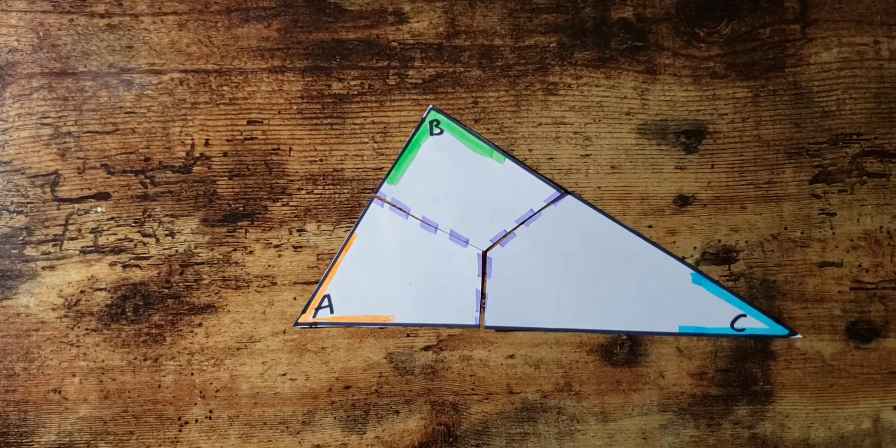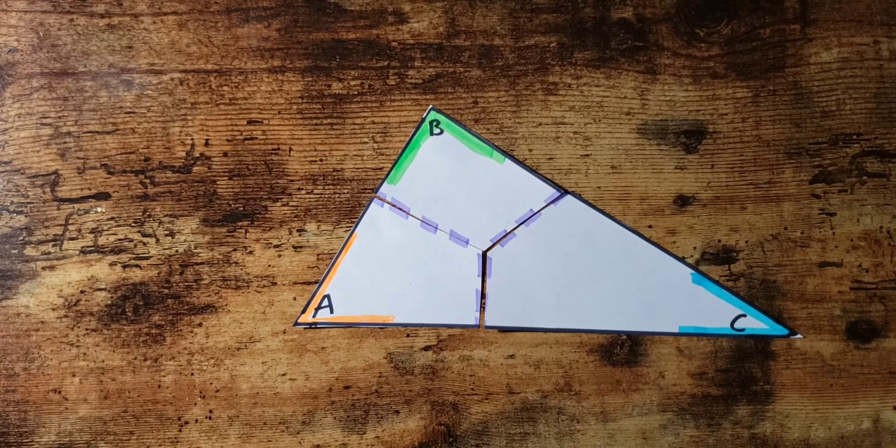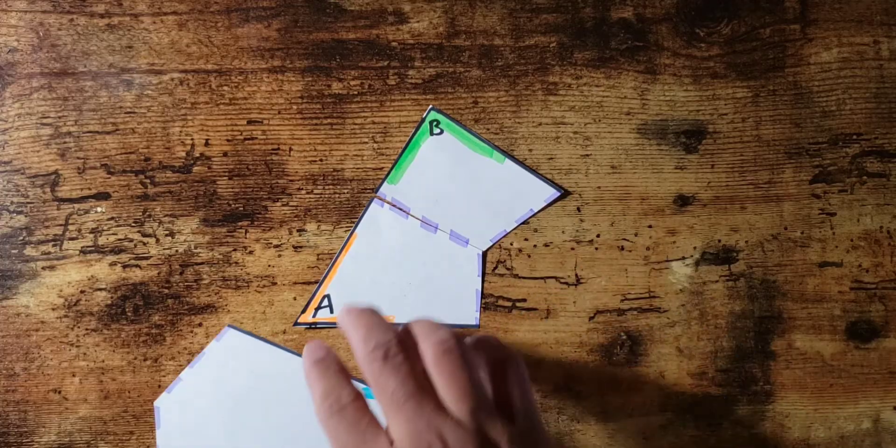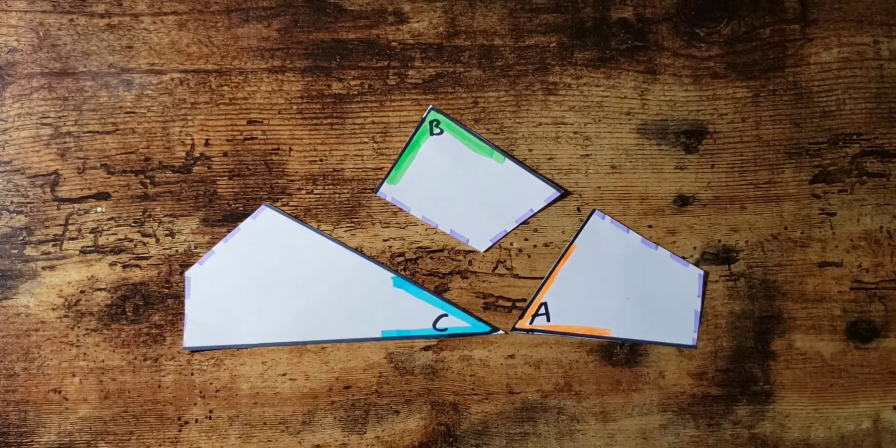Again, this triangle has been cut. I'm going to rearrange the pieces so that they form a straight line. Since I'm just moving the pieces around, that is a translation and that does not change angle size.